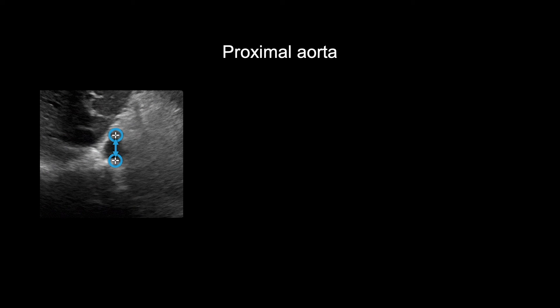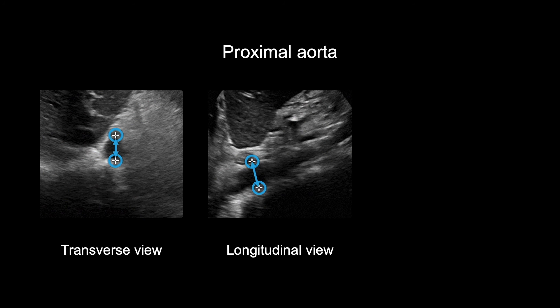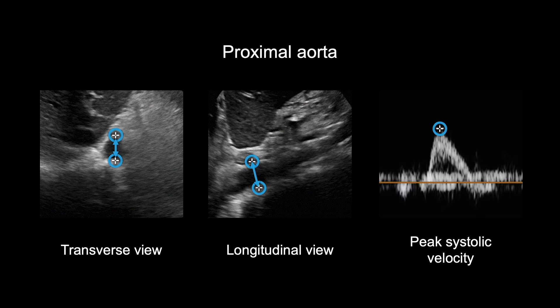Begin as you would in a preoperative ultrasound by measuring the anterior-posterior diameter of the proximal aorta in transverse view, as you can see in the left image, and then in longitudinal view. Also obtain a peak systolic velocity measurement. These images should look the same as the preoperative proximal aorta.